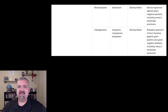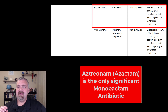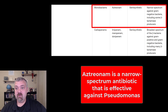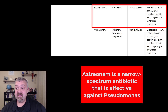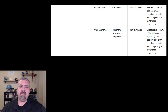The only important monobactam — really the only one that's used — is aztreonam, which is called Azactam. It is narrow spectrum, and the reason it's still very important and worth noting is that it's effective against Pseudomonas. Pseudomonas is one of the really most terrifying organisms. When I think of nightmare bacteria, Pseudomonas comes to mind. In the lab, when we're testing the effectiveness of antibiotics, I always have students test against Pseudomonas, because I want to see how it works.